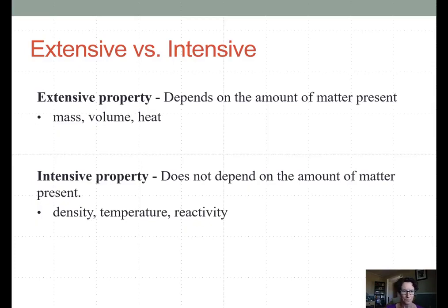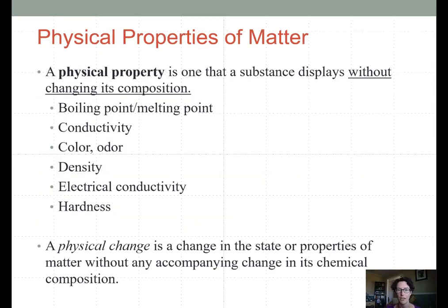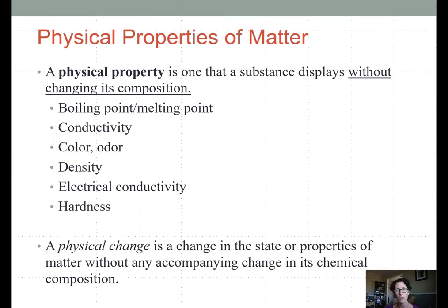Physical properties are those that a substance displays without having to undergo any sort of change in its overall composition — the types of atoms and elements that the material is made out of. These are things we can measure directly in a material without mixing it with something else: its boiling point or melting point, when it undergoes phase changes, conductivity, basic things like its color or its smell, density — that's one of those intensive properties — or hardness.